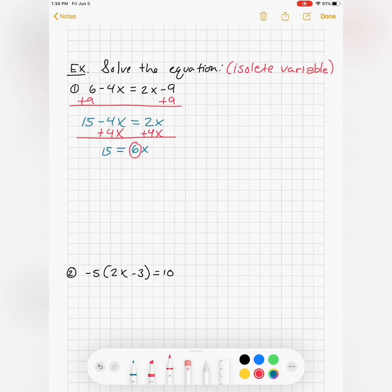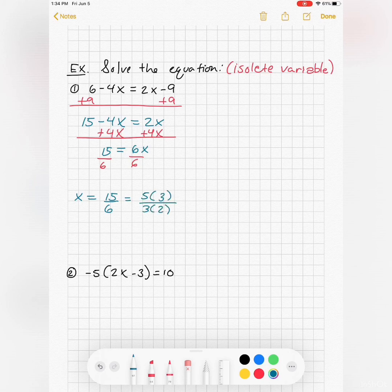Then to get x by itself, I have to get rid of this coefficient, that multiplier. So I have to divide both sides by six, so my x is now isolated. It's 15 over six. I just have to reduce that fraction. So looks like I've isolated my x, solved my equation. The result is five halves.